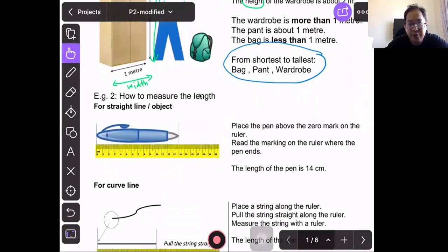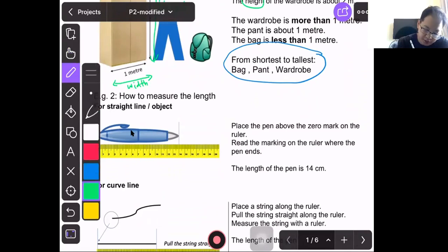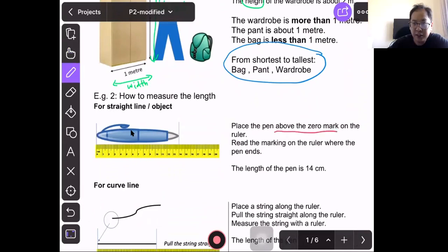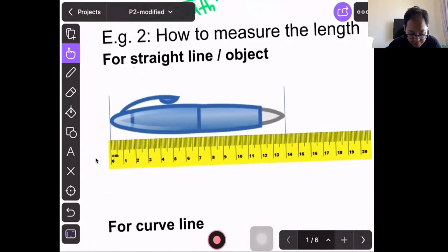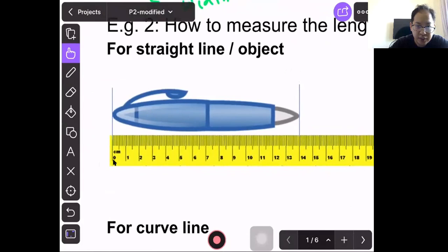How to measure the length? For straight line or object, we can use a ruler. How do we measure the length of the pen? First we place the pen above the zero mark. Where is the zero mark of the ruler? It's right here. See zero at the starting point.